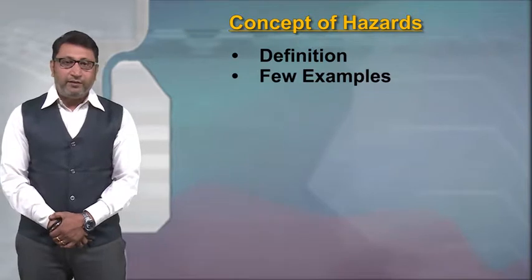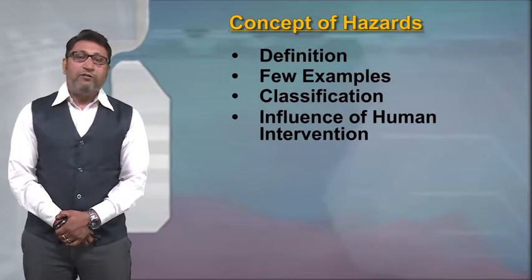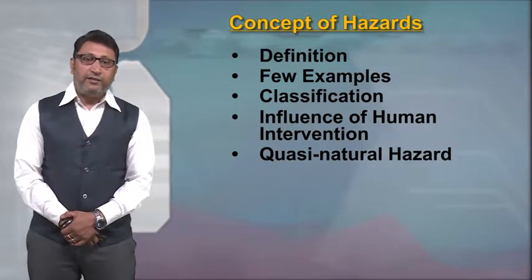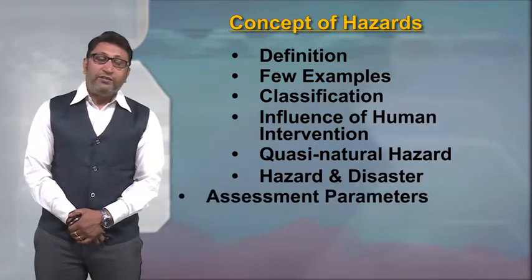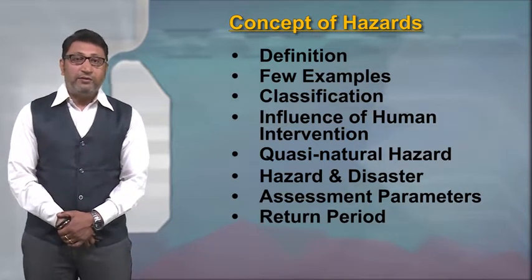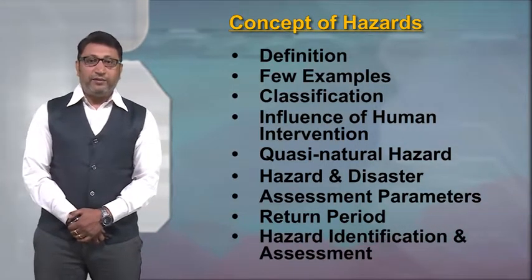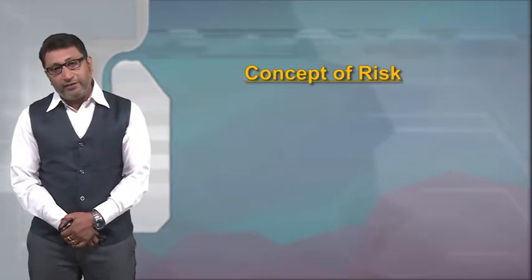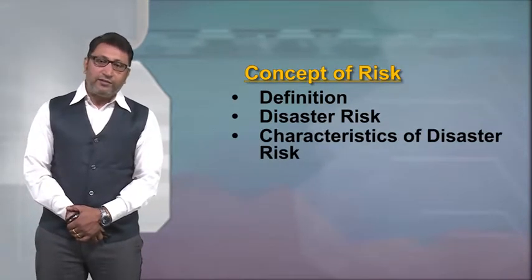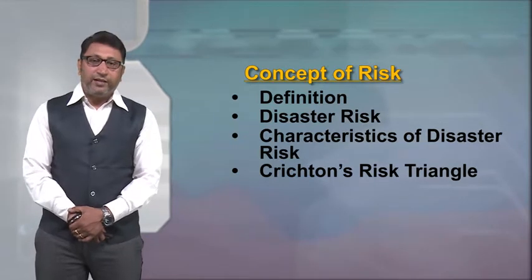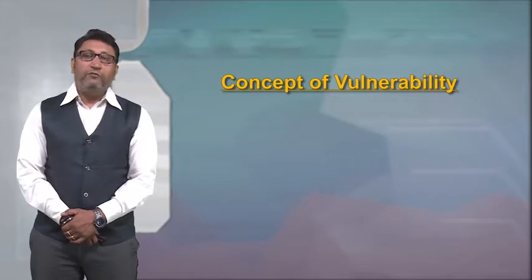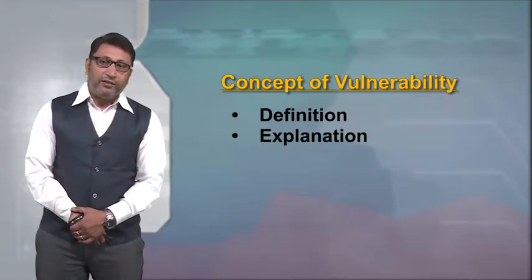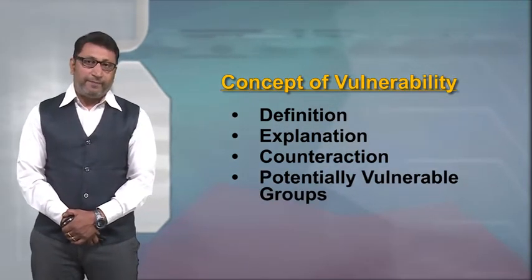With this we have come to the end of this lecture. To wrap up: we started with the concept of hazard — its definition, examples, classifications including secondary and natural hazards, the influence of human intervention, the differentiation between hazard and disaster, return period, identification and assessment. The second part covered the concept of risk — its definition, disaster risk, characteristics, Crichton's risk triangle, risk management and risk assessment. Finally, we covered the concept of vulnerability — its explanation, counteraction mechanisms, and potentially vulnerable groups. Thank you so much.